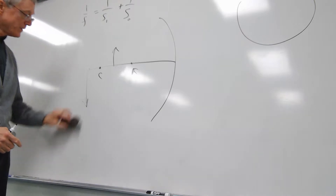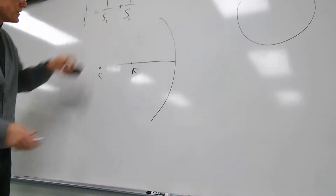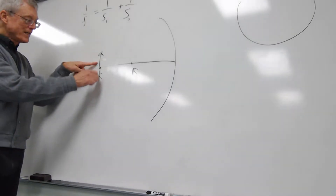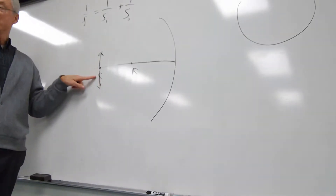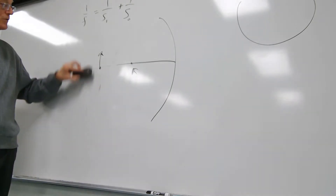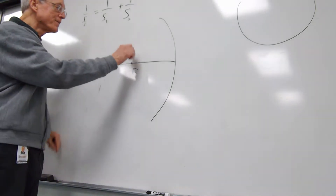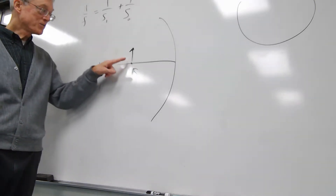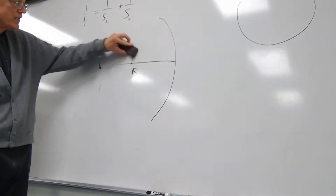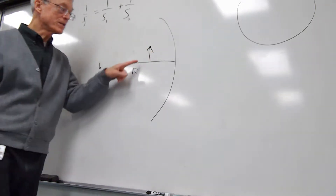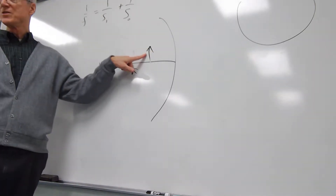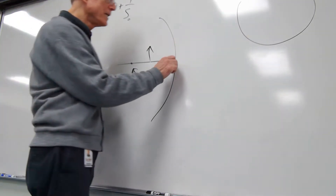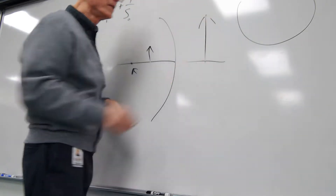If we put the object right at C, the image is upside down, same place, same height. If we move the object to F, there is no image — that's the only place there is no image at all. And finally, if you put it closer in than F, then the image is right side up — it's a virtual image behind the mirror, larger and upright.